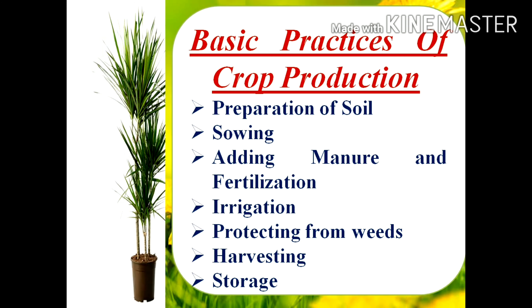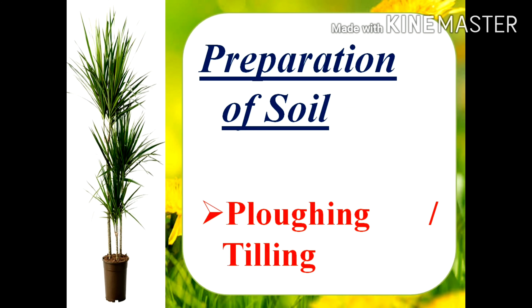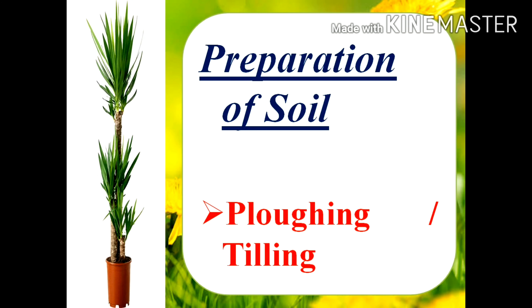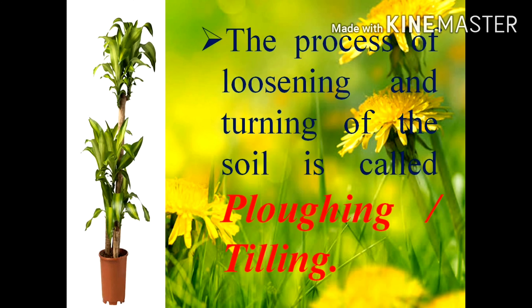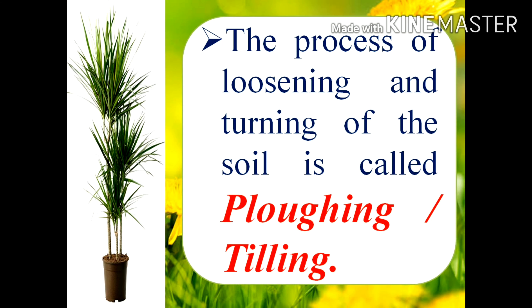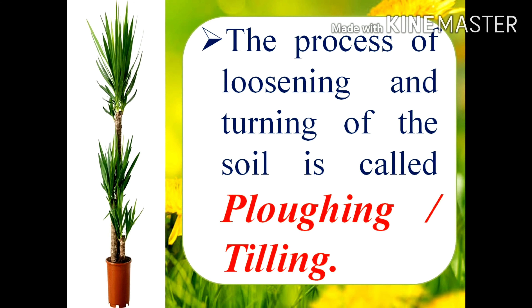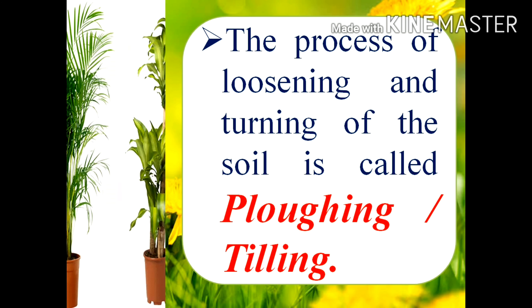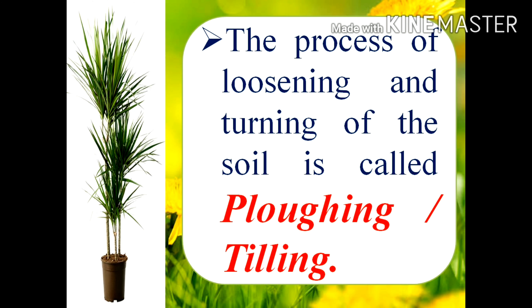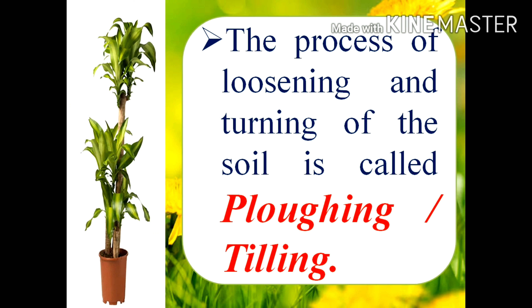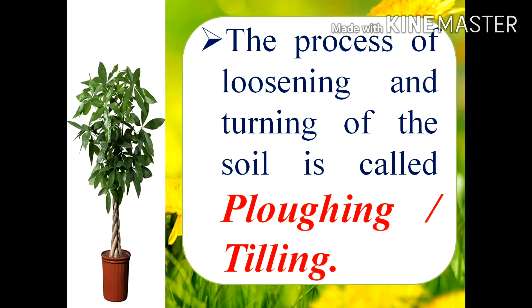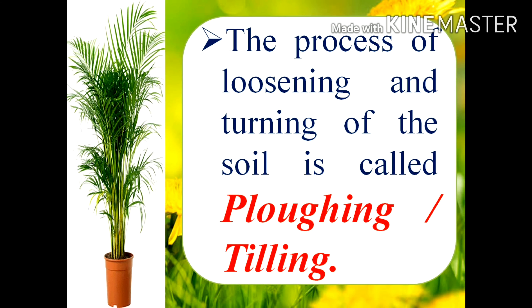How do we prepare the soil? By plowing or tilling the soil. The process of loosening and turning of the soil is called plowing or tilling. This means turning the soil from top to bottom and bottom to top, and loosening it. Write this definition — it is very important, and I have written it so you can learn and write it even though it is not mentioned exactly this way in your textbook.